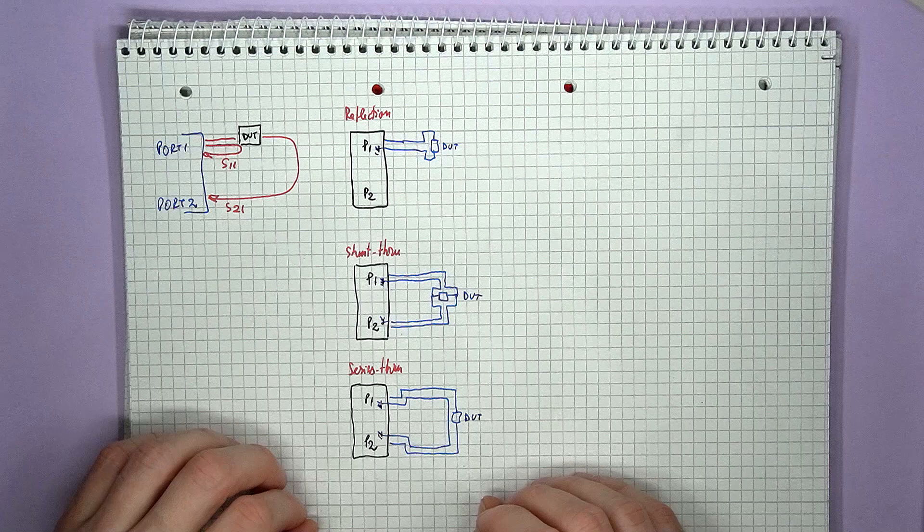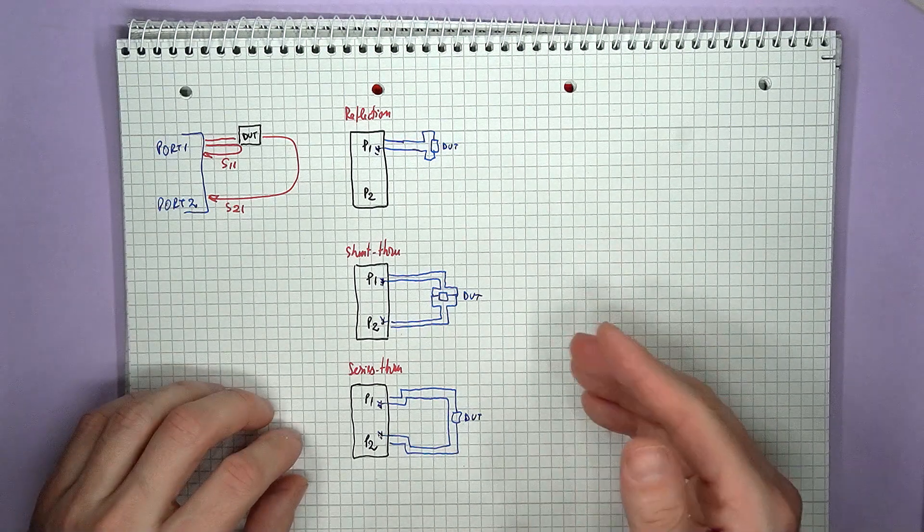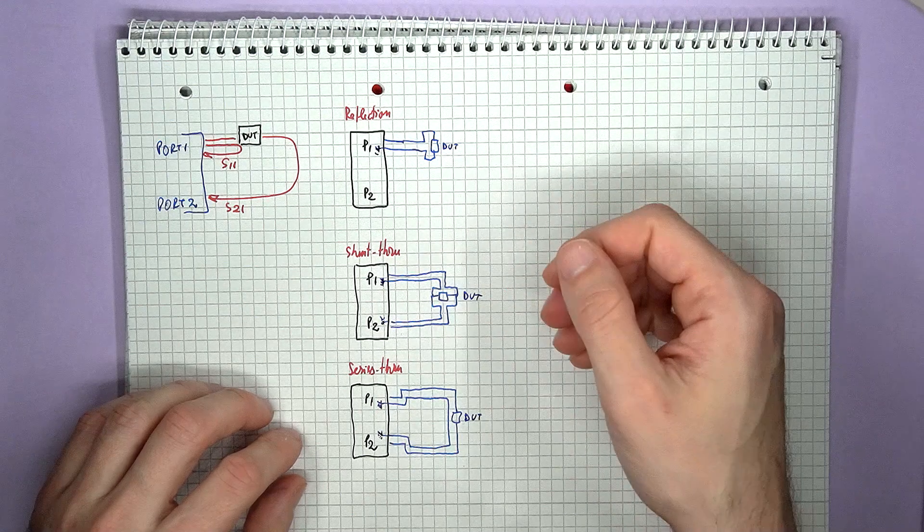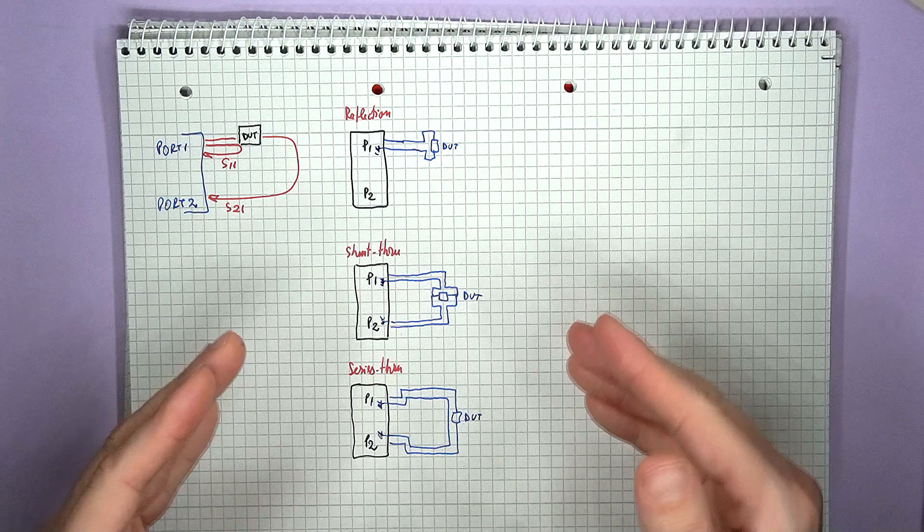So coming back to measuring impedance, there are three main ways that this can be done using a VNA. You have the reflection or shunt method, where you are using just a single port,